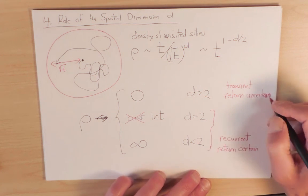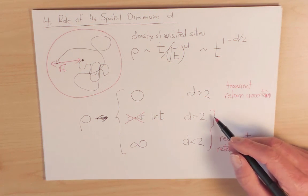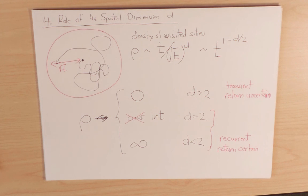One important point to emphasize is that even though the return is certain for d less than or equal to 2, as we will have learned at the end of this tutorial, the mean time to return to the origin is actually infinite. This dichotomy between certain return and infinite return time is what makes random walks so intriguing.